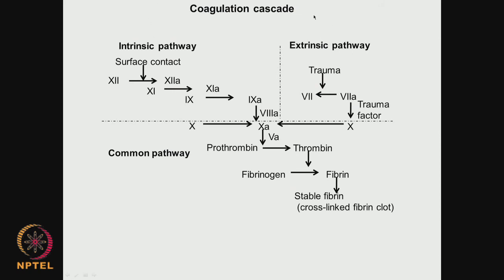Coagulation is very important for survival, but when you place a biomaterial it can also lead to some clot formation. We do not want the biomaterial to initiate this cascade of events that ends up with thrombin formation, which catalyzes the conversion of fibrinogen to fibrin.